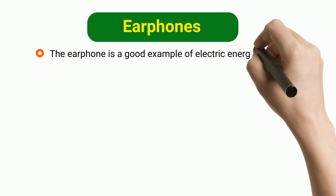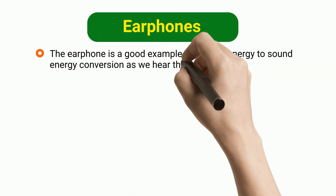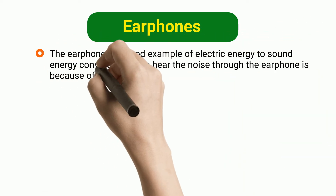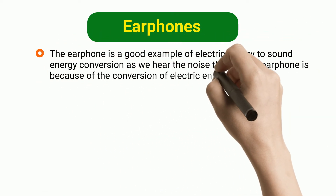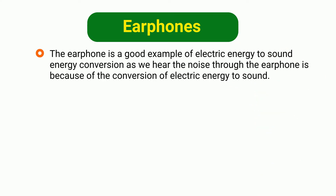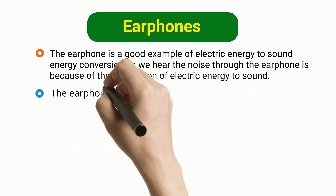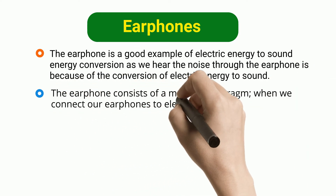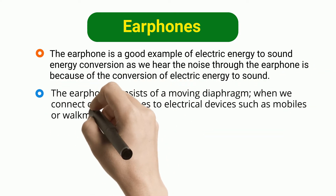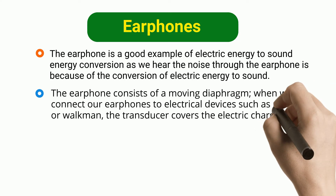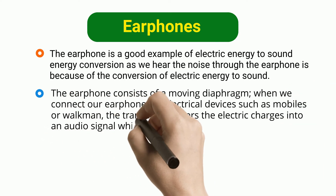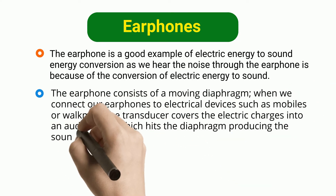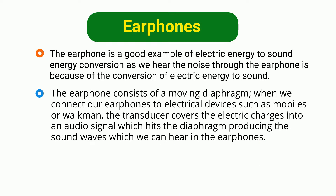Earphones are a good example of electric energy to sound energy conversion. The noise we hear through earphones is because of the conversion of electric energy to sound. The earphone consists of a moving diaphragm. When we connect earphones to electrical devices such as mobiles or a Walkman, the transducer converts the electric charges into an audio signal, which hits the diaphragm, producing sound waves we can hear.